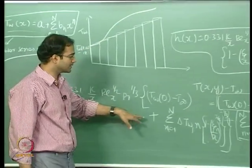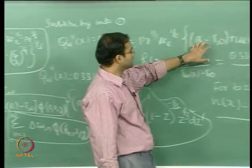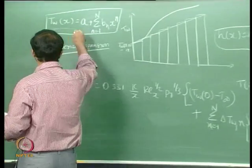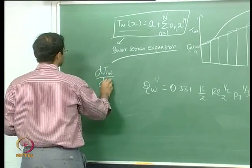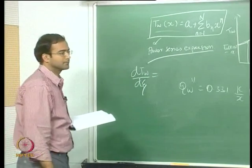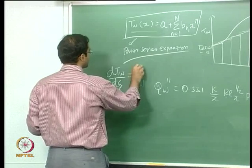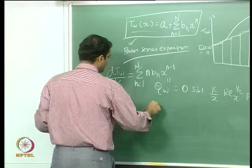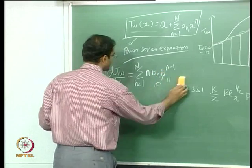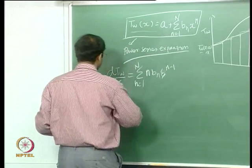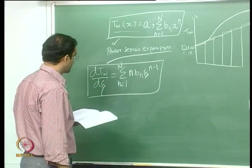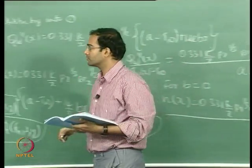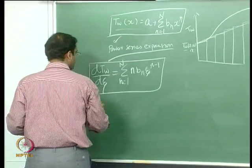Substituting the power series into the Duhamel expression, we need dT_wall/dζ. For the power series, dT_wall/dζ = Σ(n=1 to N) n × B_n × ζ^(n−1). This is then substituted into the Duhamel integral expression for dT_wall/dζ and the resulting heat flux expression is derived.